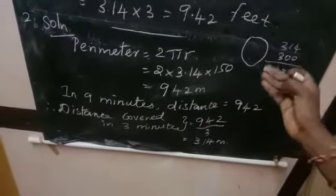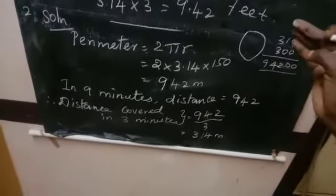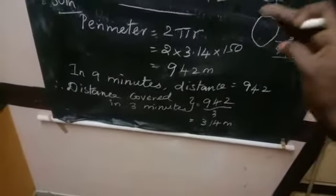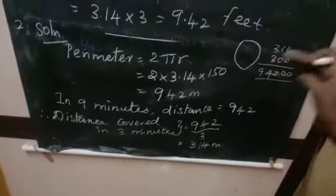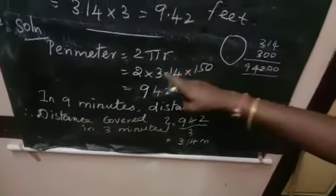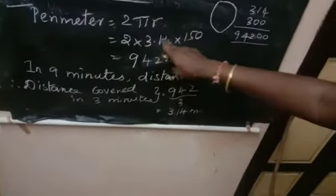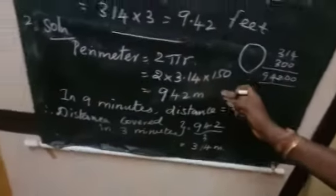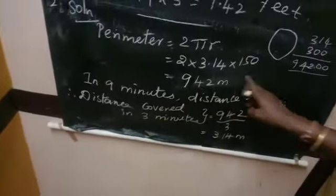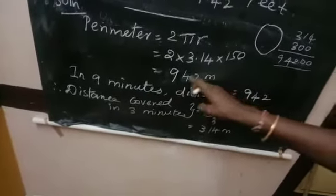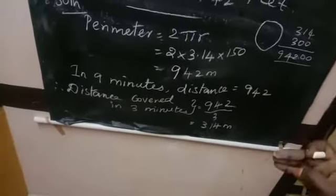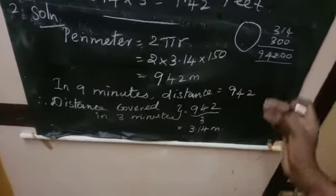Here given, the track has radius 150 meters. So 2 times pi value 3.14 times 150. We multiply these 2 or 3 numbers to get 942 meters. The perimeter of the circular track is 942 meters.